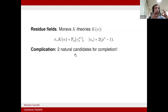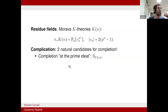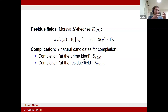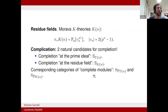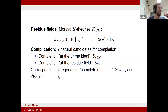There are two candidates for what it means to look at a formal disk around this residue field. One is completing with respect to the residue field — that's the KN-local sphere. The other starts from the prime ideal itself in finite spectra and formally completes categorically — that's the TN-local sphere. Both have notions of complete modules: the TN and KN local categories. That's maybe an imprecise description, but that's the way I think about them.